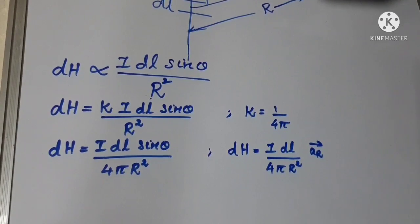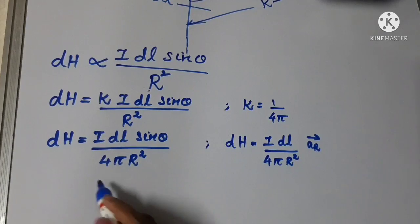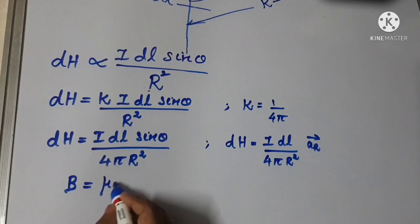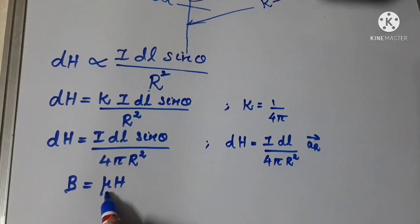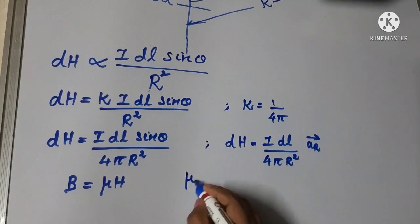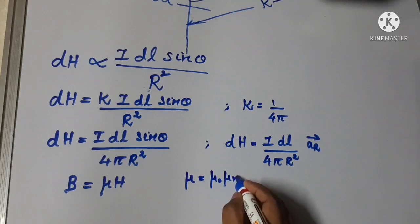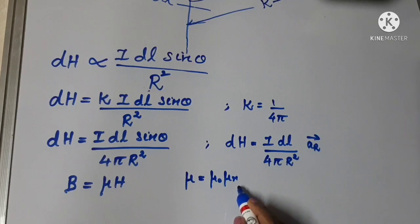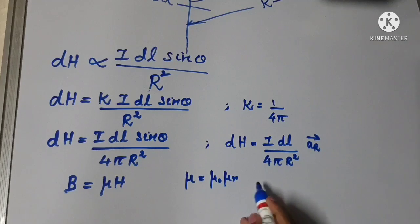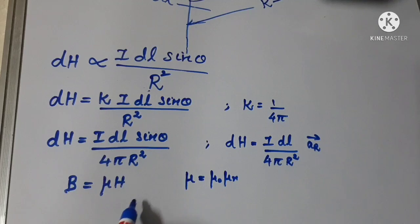We know the relation B is equal to μH, where B is the magnetic flux density, μ is the permeability of the medium, and H is the magnetic field intensity. μ is equal to μ₀ times μR, where μ₀ is the permeability of free space and μR is the relative permeability. In air medium, μR is equal to 1. This is the basic relation for magnetic flux density and magnetic field intensity.